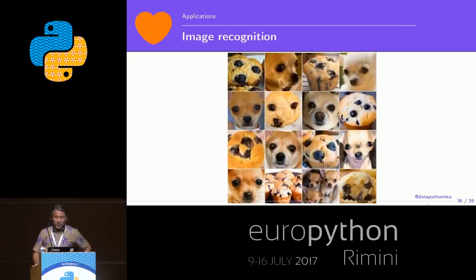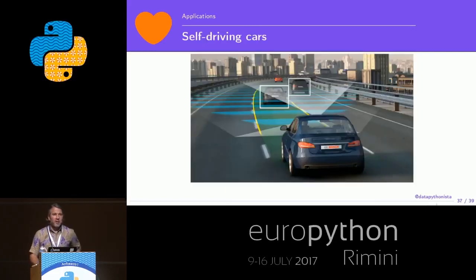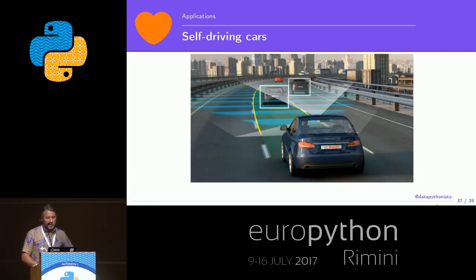Image recognition is quite a challenging topic. For example, distinguishing a chihuahua from a muffin — deep learning is managing to identify which is a muffin and which is a dog, probably better than a person in some cases. Self-driving cars are like the state of the art — they are already in several places in the US, driving autonomously with cameras and sensors, even stopping in cities when a pedestrian wants to cross.